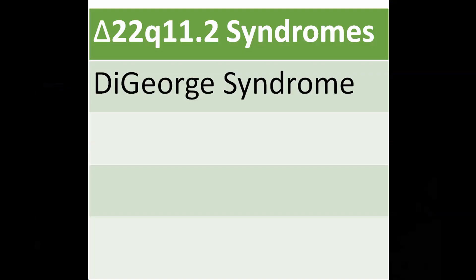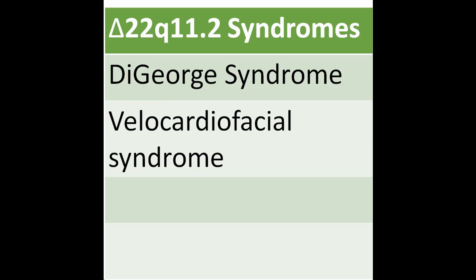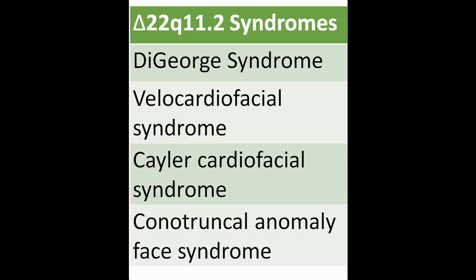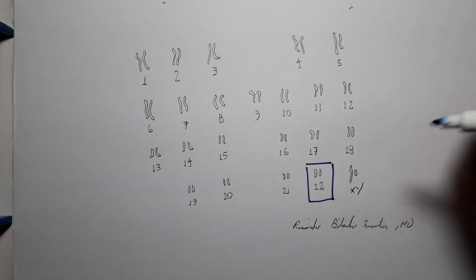It can be grouped along with Velocardiofacial syndrome, Koehler Cardiofacial syndrome, and Conotruncal Anomaly face as the three diseases caused by 22q11.2 deletion.